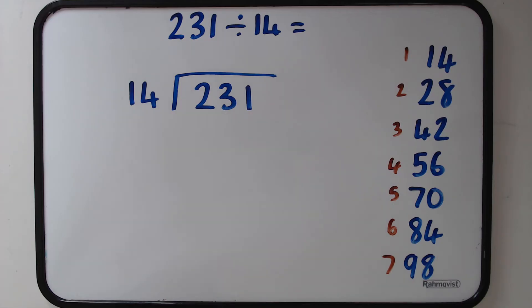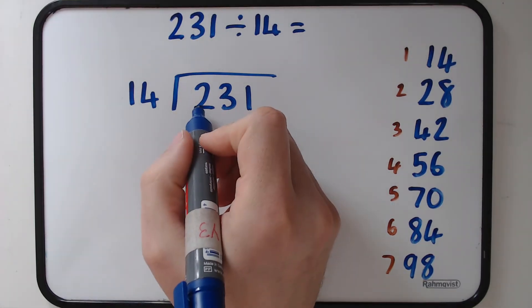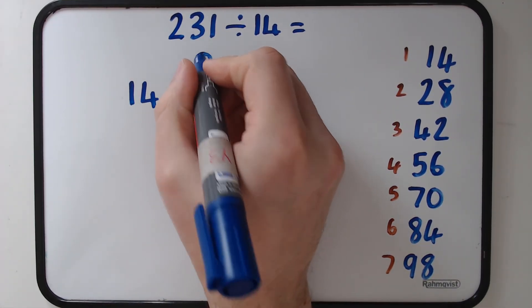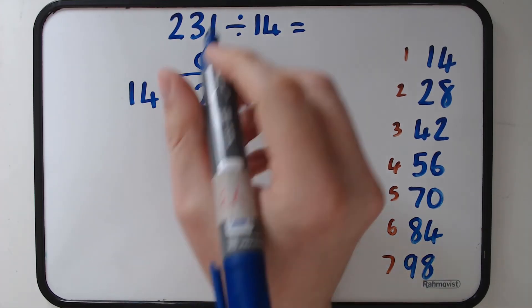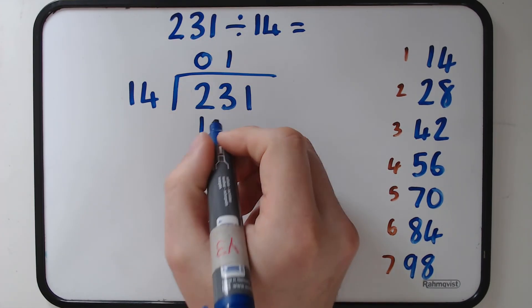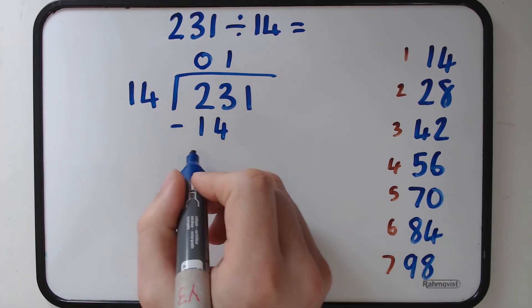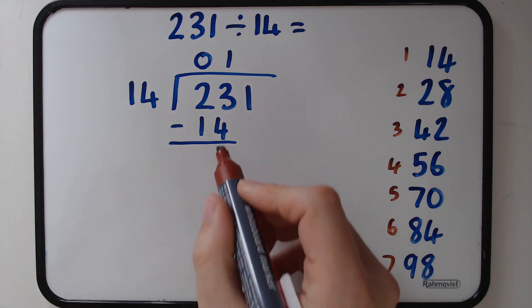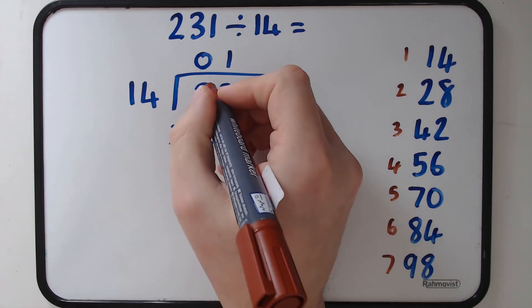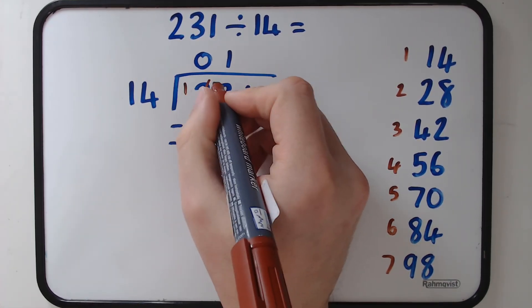Back to the sum. How many 14s go into 2? 0. How many 14s go into 23? I know there's going to be one. So we need to take away 14. I'm also going to use column subtraction here just so I don't make any mistakes. So I'm just going to go through and very quickly sort that out. And it leaves me with the answer of 9.